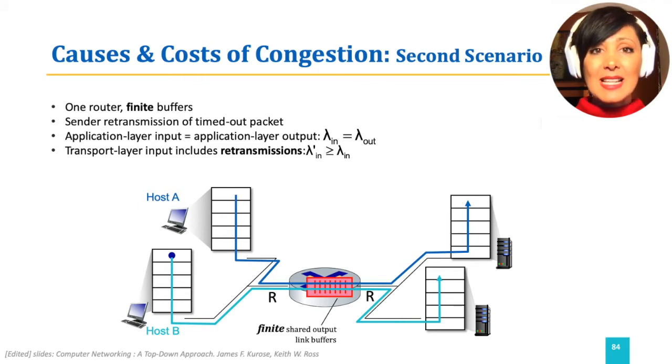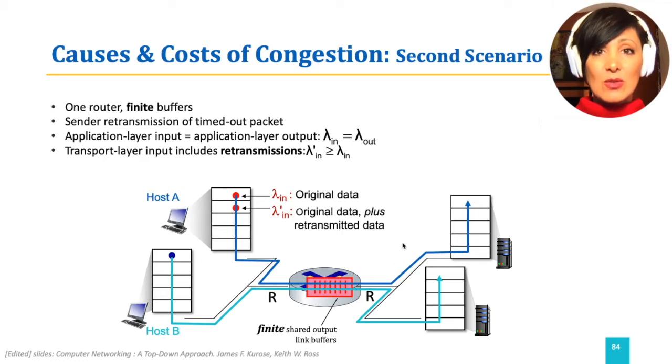Those lost packets will need retransmissions. Therefore, the transport layer rate of transmission will include those retransmitted packets in addition to the data from the layer above. Note that this increased transmission rate at the sender side will not result in an increase in the lambda out at the receiver side.